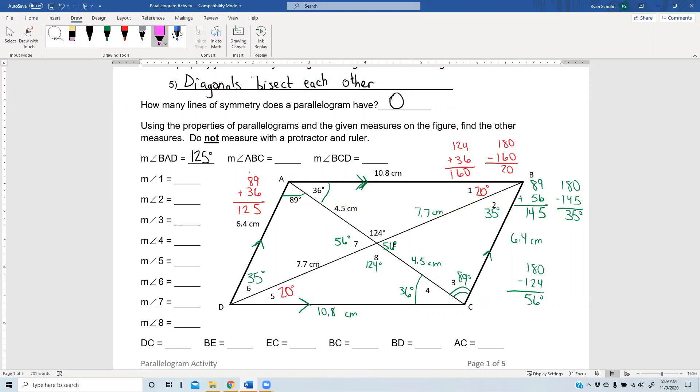Then, it asks about the measure of angle ABC. That's this whole angle right here. Let's see. I got a 20 and a 35. You add those together and you get 55 degrees. And then, last but not least, last but not least on this row, find the measure of BCD. So, that's going to be BCD. That's this whole angle down here. It's going to be the same as the first one we found. 125 degrees.